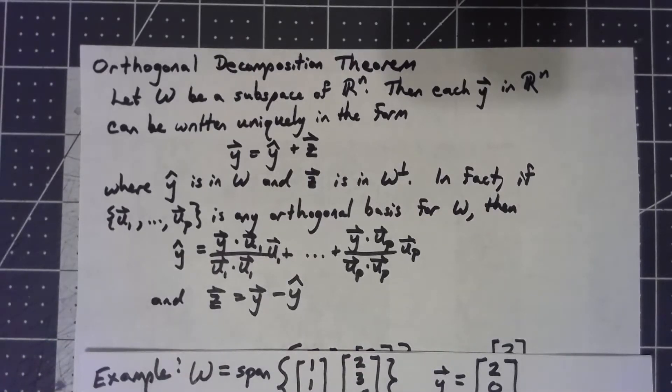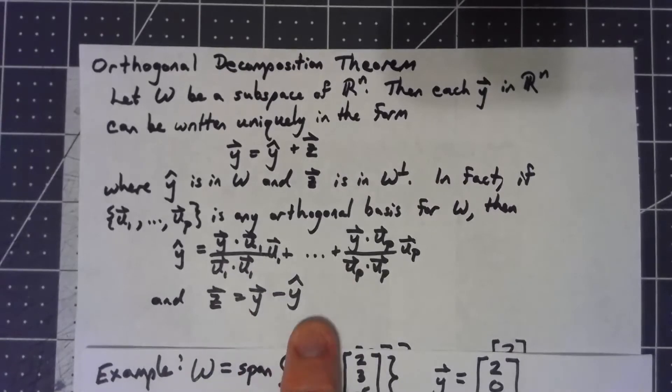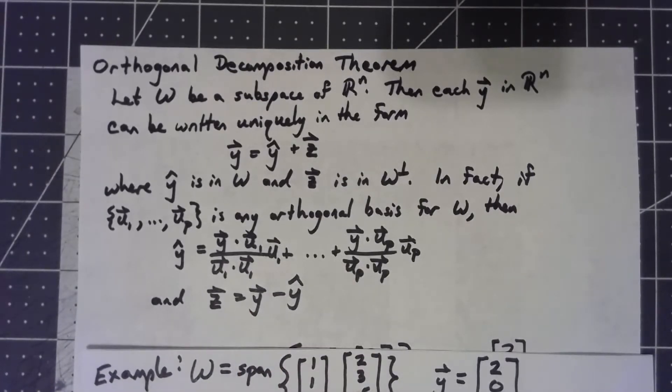And then once we have that, we can go ahead and find the perpendicular part by just subtracting, taking the original vector, subtracting the part that's in w, whatever remains has to be the part that's in w perpendicular.